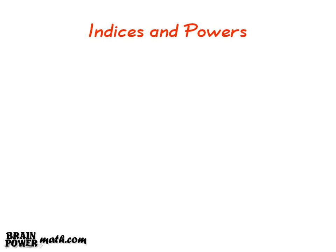We will firstly look at the area of indices and powers. An index is a number at the top right hand corner of a figure, which denotes a power. The power of a number is how many times the number is multiplied by itself.